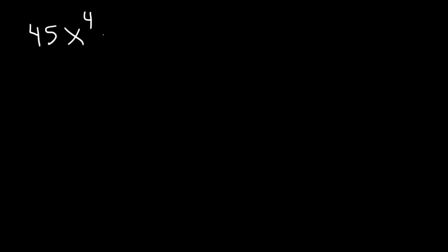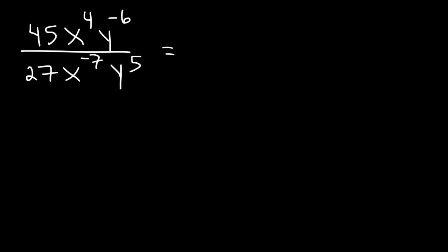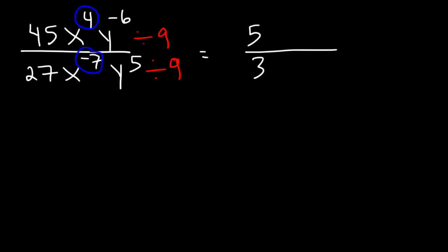Now let's work on some examples that involve division. We can't divide 45 and 27 directly, but notice that both numbers are divisible by 9. So divide both numbers by 9: 45 divided by 9 is 5, and 27 divided by 9 is 3, so it's 5 over 3. Now let's focus on the exponents: 4 minus negative 7 is the same as 4 plus 7, which is 11. So we're going to have x to the 11th on top.